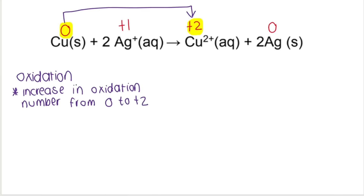It makes sense. If the oxidation number has increased, what has happened is it has gone more positive. And when will you become more positive? If you lose electrons, you become more positive. If you lose negative things, you become more positive. Remember, oxidation is loss of electrons. So clearly the copper was oxidized.